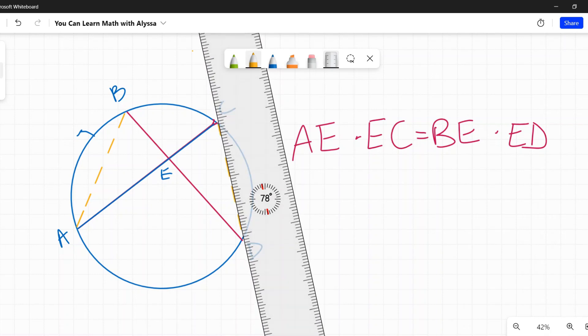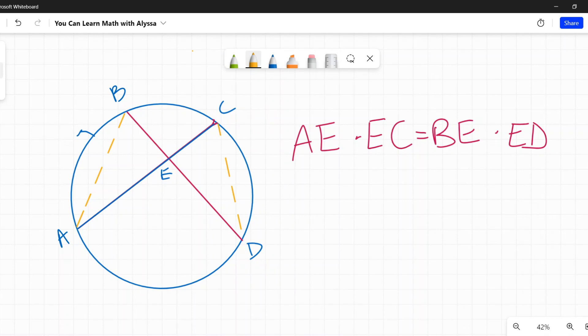This isn't perfect, I know. But okay, so I have these two triangles now, ABE and CDE.